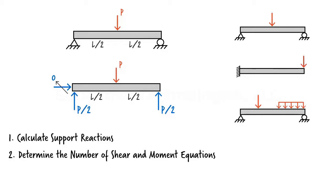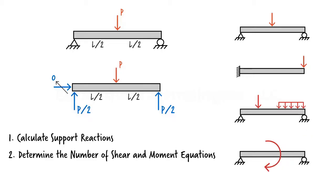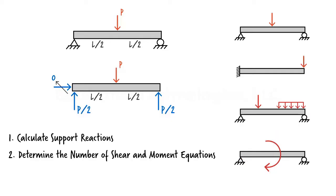It may appear that the required number of shear equations always equals the required number of moment equations, but that is not necessarily true. Consider a beam subjected to a concentrated moment at its midpoint. This causes a sudden discontinuity in the beam's internal bending moment at that point, so two equations are needed for representing moment. However, the concentrated moment does not cause any abrupt change in shear, so we can represent shear in the beam using a single equation.